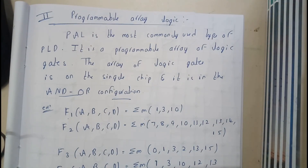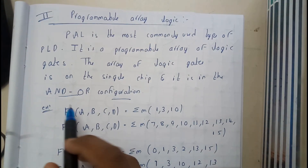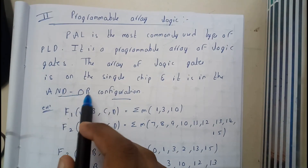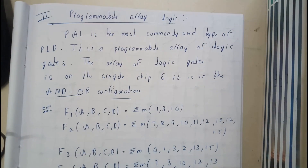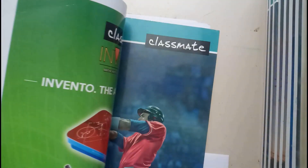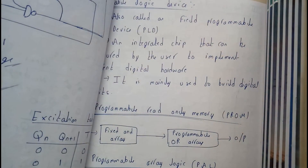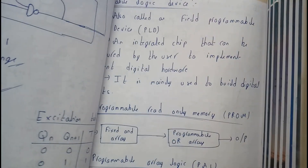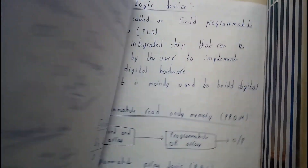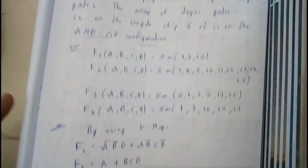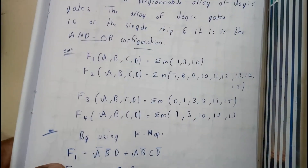Here, we are having a programmable AND array and a fixed OR array. That's it. Programmable AND array and fixed OR array.